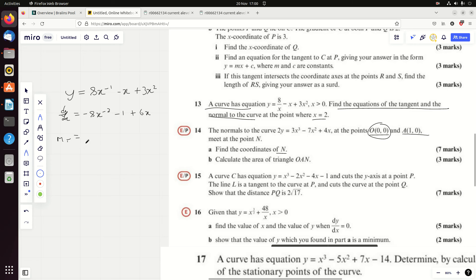So the gradient of the tangent at x equals 2 - we need to plug in - we've got minus 8 times by a quarter, which is minus 2, minus 1 plus 12, and so the gradient of the tangent is 9. Bearing in mind we won't have to do this again for the normal because we just take the negative reciprocal of that. Now when x is 2, what is y? Well, you're going to have 8 divided by 2, which is 4, take away 2, which is 2, add 3 times 2 squared, which is add 12, so I think y is 14.